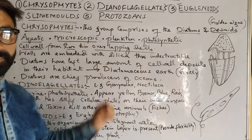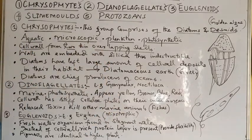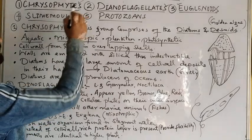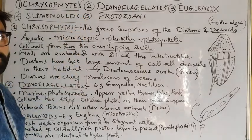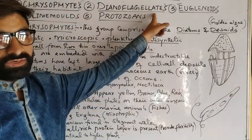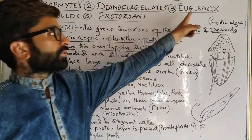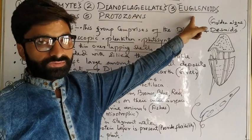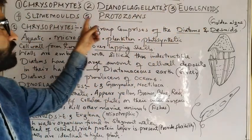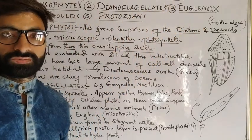The first group is chrysophytes, then dinoflagellates, euglenoids, slime molds, and protozoans.